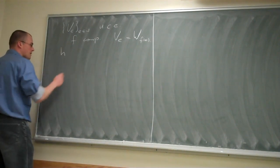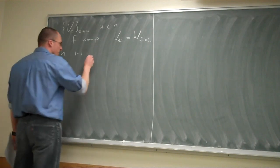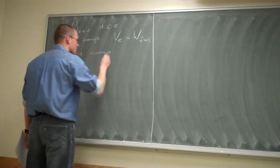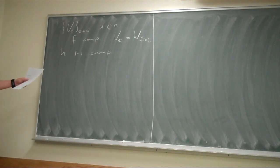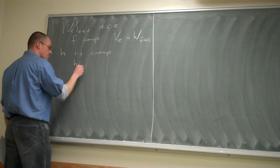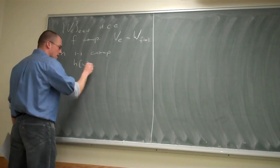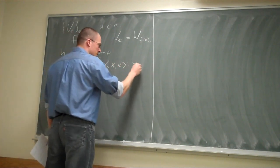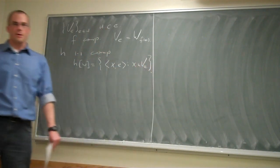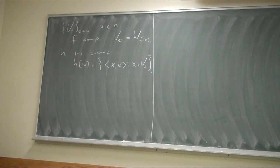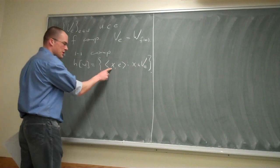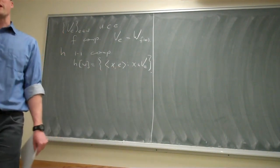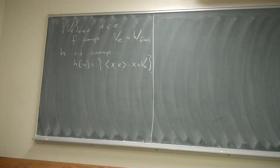We have the notion of a uniformly computably enumerable sequence of sets, which is a sequence of CE sets that does not contain additional information inside the indices. This is given by a computable function F such that V_E = W_{F(E)}. So the index for the E-th set is computably obtained from E. If you have such a uniformly CE sequence, you can obtain an H which is 1-1 and computable.